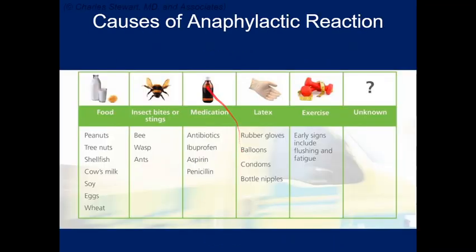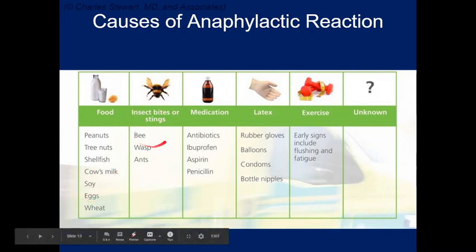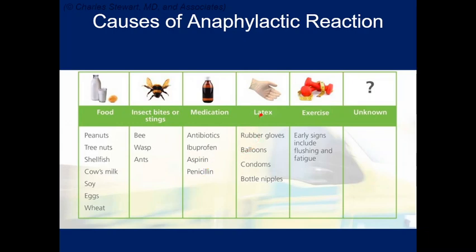Common triggers for anaphylactic reactions include food allergens — peanuts are classic — as well as tree nuts, shellfish, eggs, and cow's milk. Bee stings and wasps are also common triggers, as are medications like penicillins. Latex is another trigger, which is why our gloves are latex-free — some people have allergic reactions to latex.